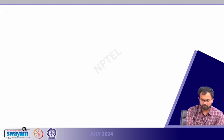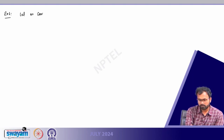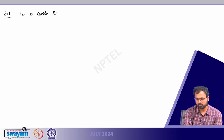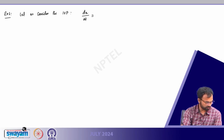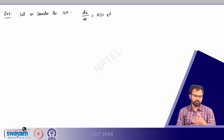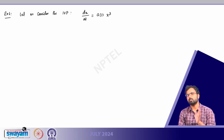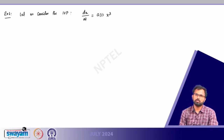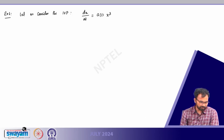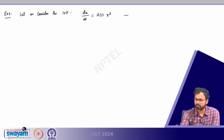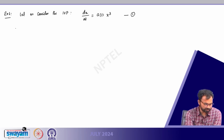Example 1. We will stick to the scalar case. Let us consider the initial value problem dx/dt = a(t) · x³, with initial condition x(t₀) = x₀. We may choose other initial values later if needed. This is a very simple problem — let us call it equation number 1.